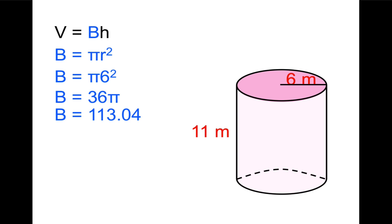That's the area of the circle. Now we need to multiply that by the height of the cylinder. So we're going to plug back into our formula. Volume equals 113 times 11. Therefore it's 1,243 meters cubed.